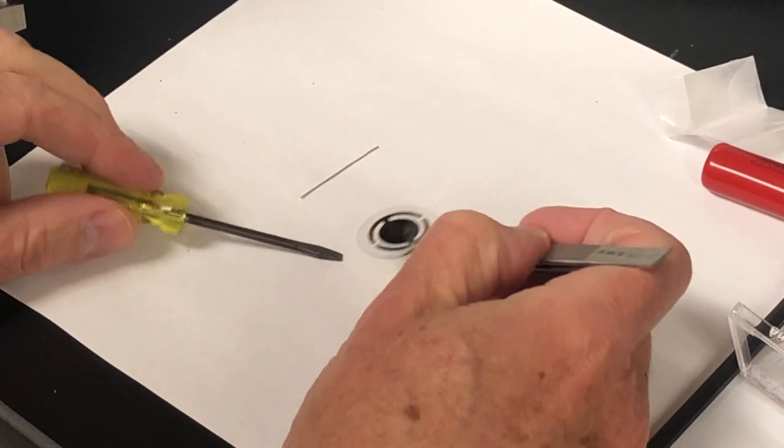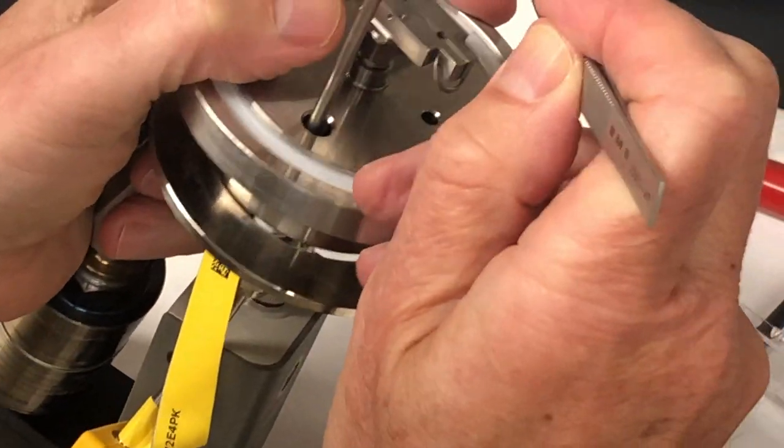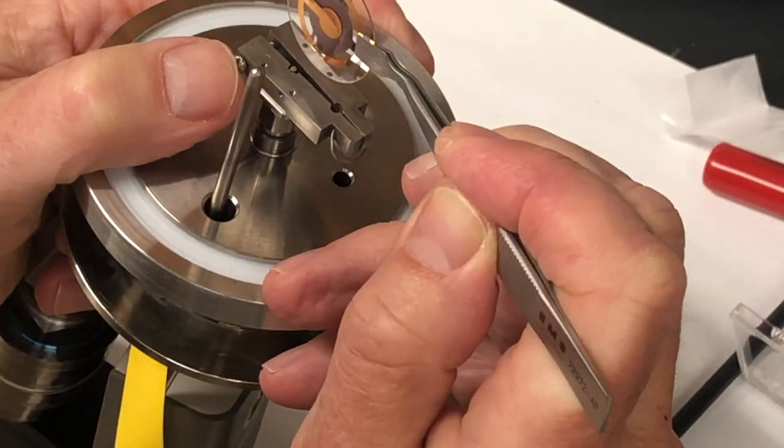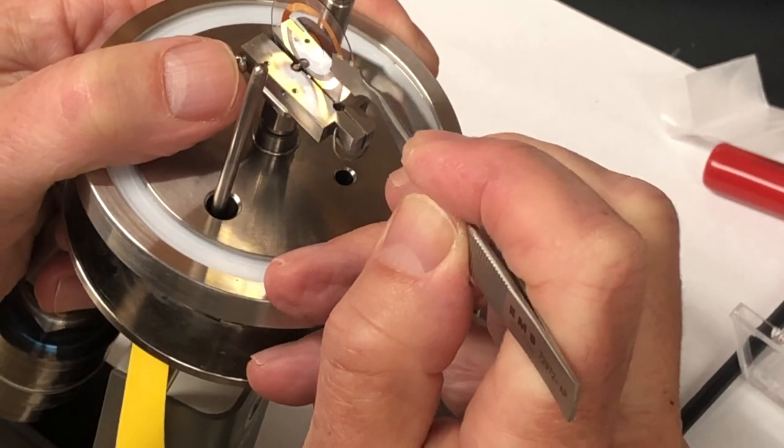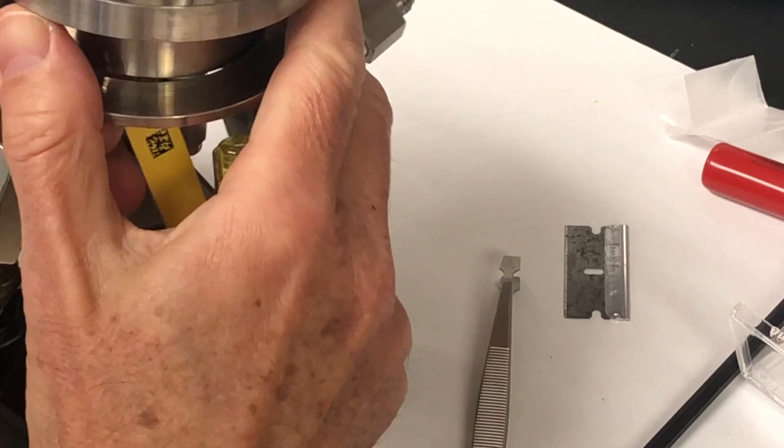And now we carefully pick up the crystal with tweezers and place it into the adapter so that one side of the electrode aligns with the wire and the other side aligns with the ground connection.